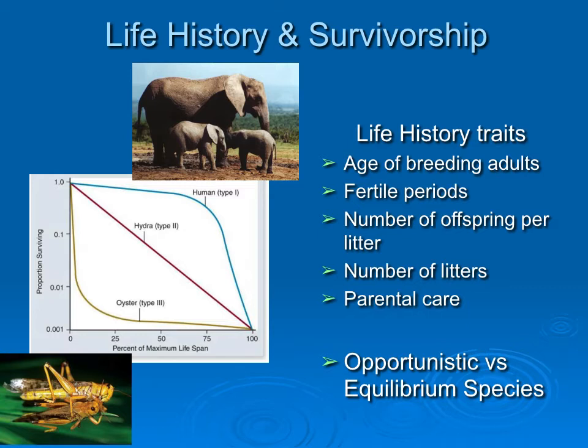In other organisms there's an early period, like a larval period, that's very risky. If you make it through, you then have a steady chance of survival, but most individuals die in this early period. That's the Type III survivorship curve. These types of survivorship curves are often associated with a certain type of life history set of traits.